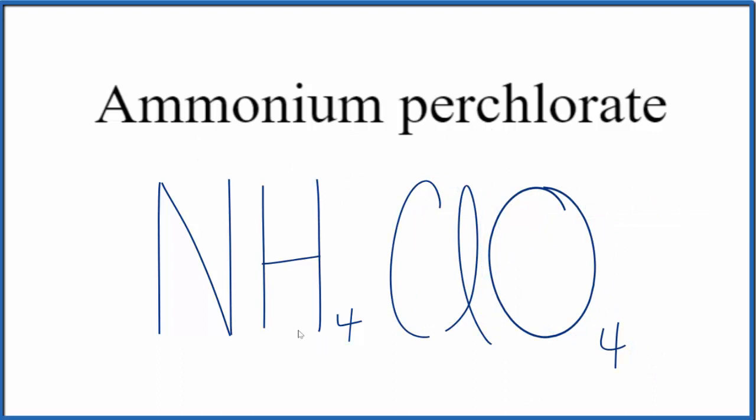If you were given this formula and asked to write the name, you need to recognize you have the ammonium ion and you have the perchlorate ion, and you would call it ammonium perchlorate.